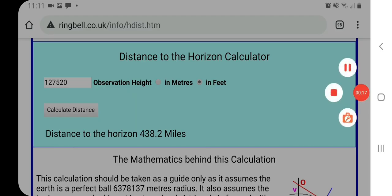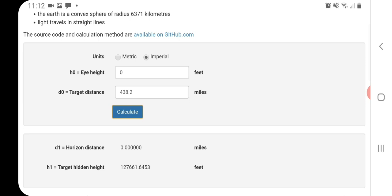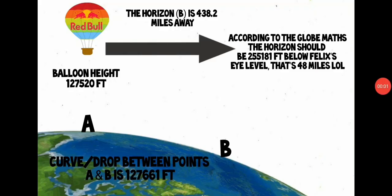Now I want to know how far the ground curves between two points of reference. Point A being the ground beneath Felix's balloon, point B being the horizon Felix is seeing from his balloon. So I've put in an eye height of zero because obviously I just want to know what the ground is doing here between those two points of reference below Felix. So eye height zero, target distance height 438 miles, which is the distance between the two points of reference—the ground beneath Felix and the horizon Felix is seeing from the balloon according to the globe math. So I calculate and I get the figure of 127,661 feet.